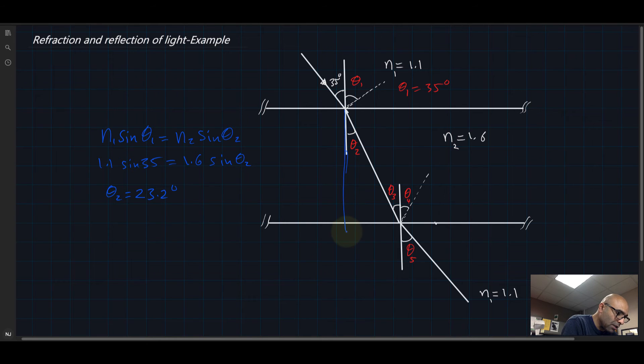And these two are opposite in direction, so theta 2 must equal theta 3. So theta 3 must be equal to 23.2. Theta 4 is reflection; reflection is equal to the incident, so this is also 23.2. Now we need to find this angle.